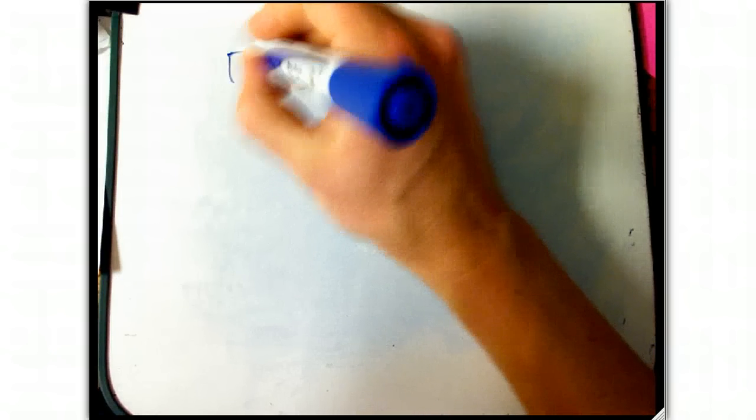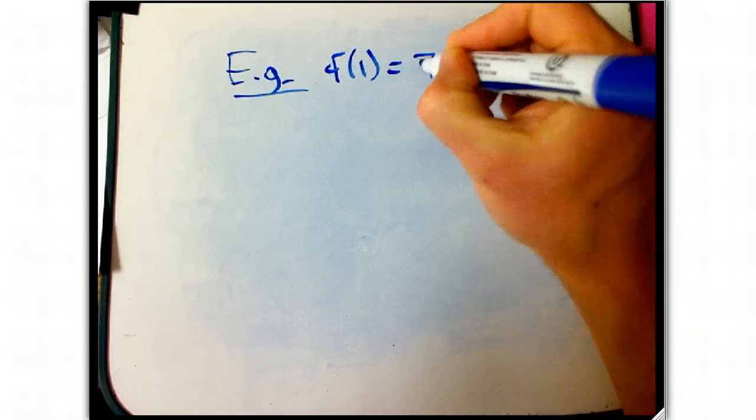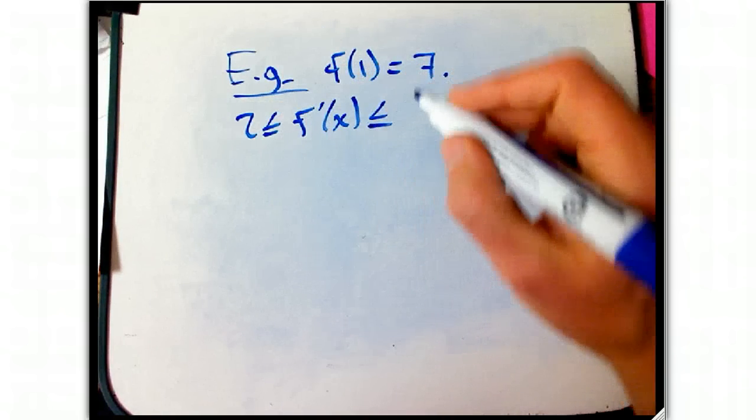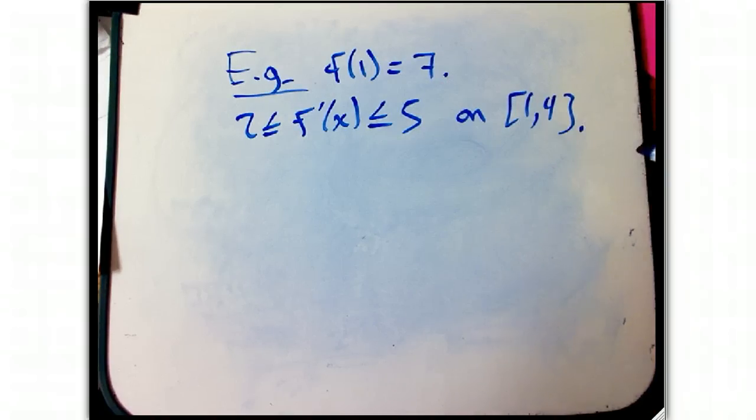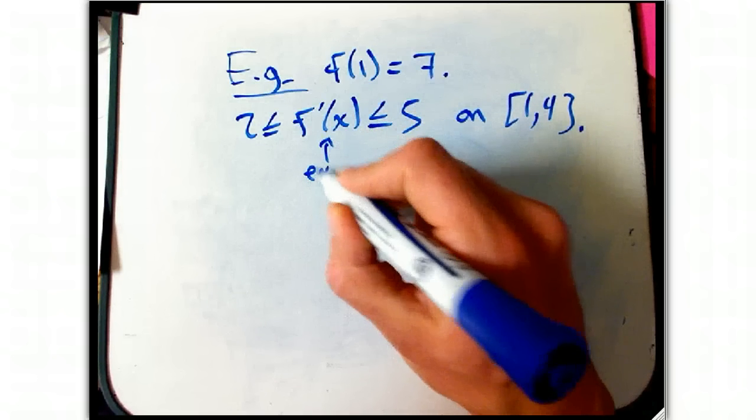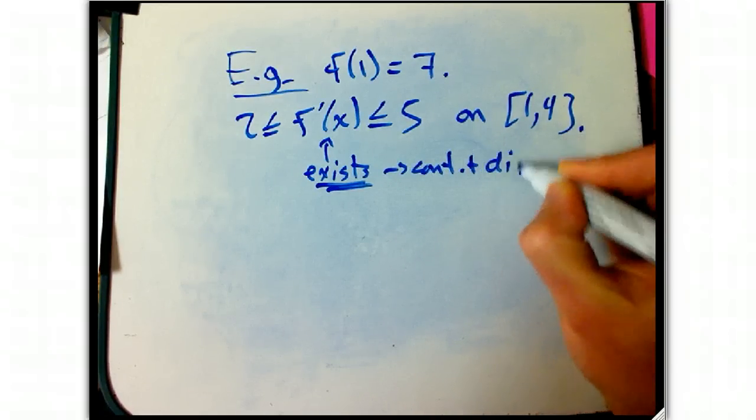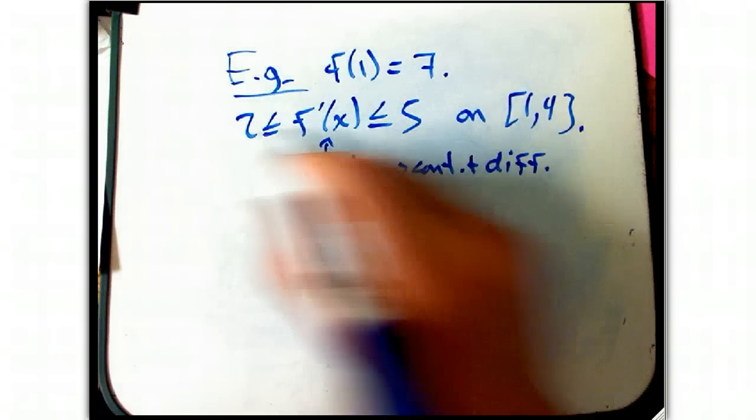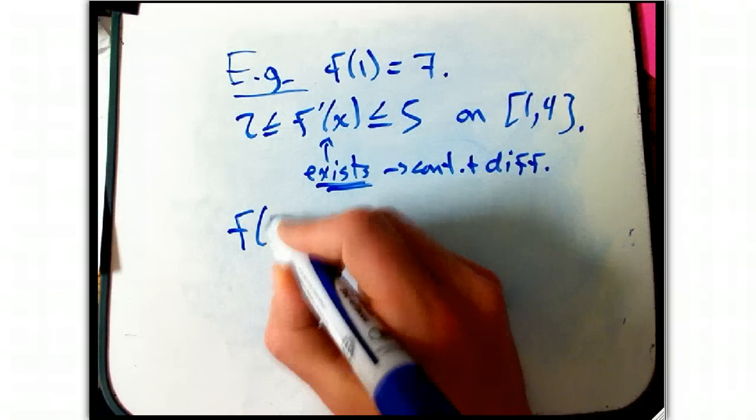So, for example, let's suppose f of 1 equals is known to be 7, and I know that the slope is always between 2 and 5, on the interval, just on the interval 1 to 4. And this always exists on this interval as well. It's always continuous and differentiable. And so we've got this information about the tangent slopes, and we want to use that to say, let's see, the question is, what can we say about f of 4?